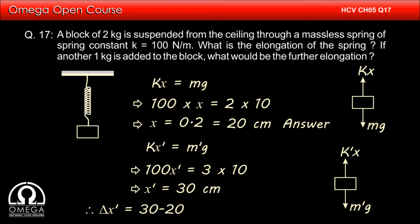Extra elongation in the spring is final elongation minus initial elongation, that is 30 minus 20 or 10 centimeters. This is the answer to the second part of the question.